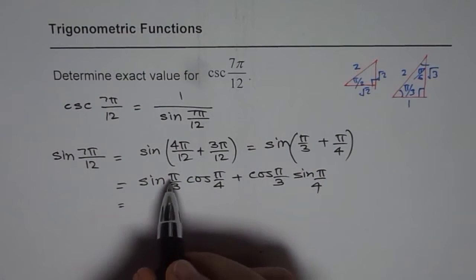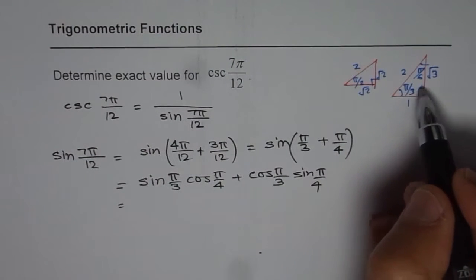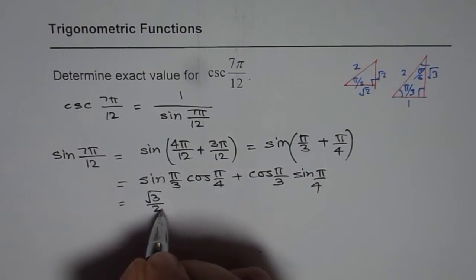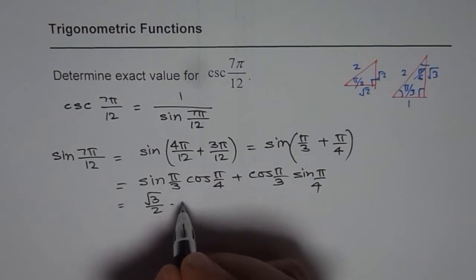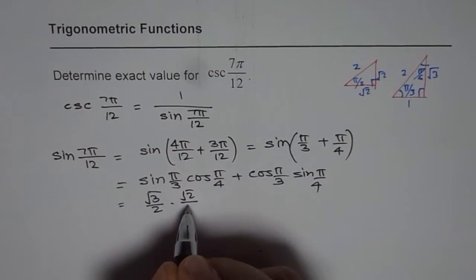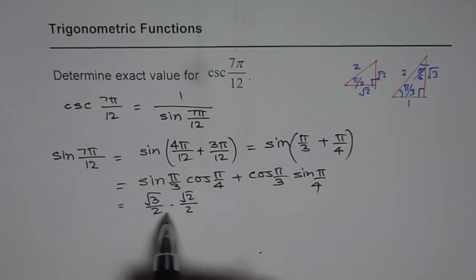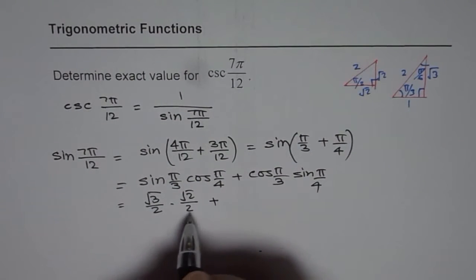Now sine pi by 3 will be equal to square root 3 over 2. So we get square root 3 over 2. Cos pi by 4 will be square root 2 over 2. So I have purposely used square root 2 over 2 instead of 1 over square root 2, so that we get the common denominators as 2.